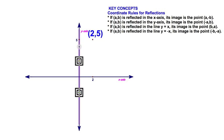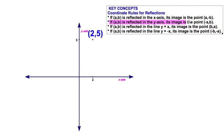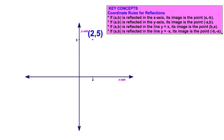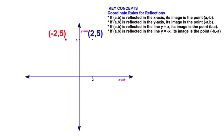Let's try another: reflecting over the vertical axis, or the y-axis. As our rule states, the point (a, b) will reflect to the point (negative a, b) — the opposite of a. So (2, 5) reflects to (-2, 5). And there it is.